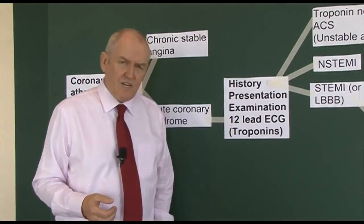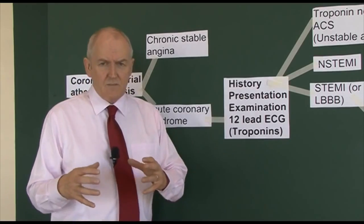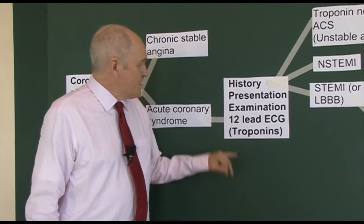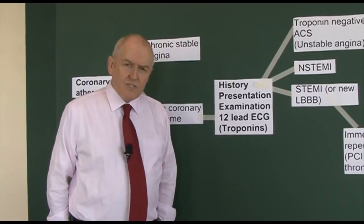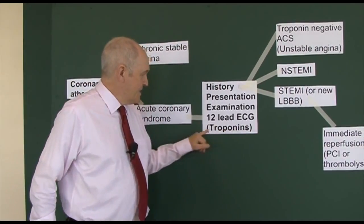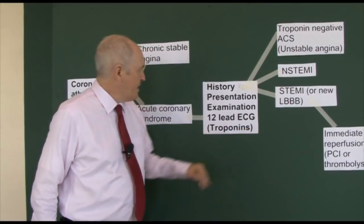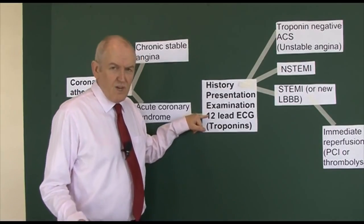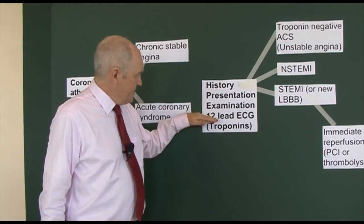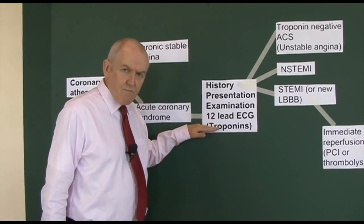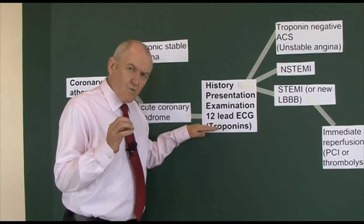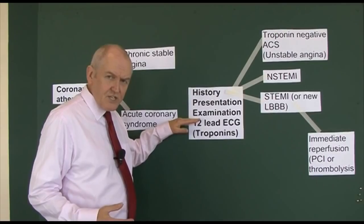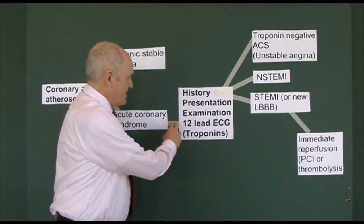As healthcare professionals, this is something we must always take completely seriously - this is a medical emergency. We do a 12-lead ECG and take blood for cardiac markers, particularly the troponins. The 12-lead ECG will only take a few minutes so should be done immediately. The blood results for the troponins won't be back for an hour or two, so we can't wait for that. We have to act clinically based on the typical presentation of acute coronary syndrome and the 12-lead ECG.